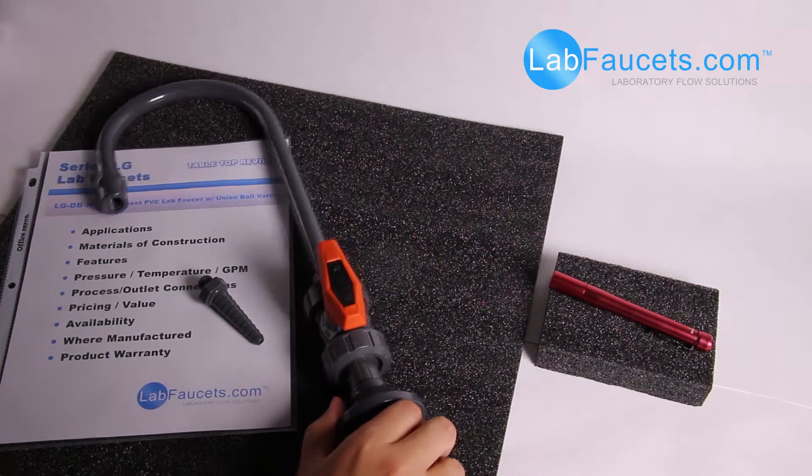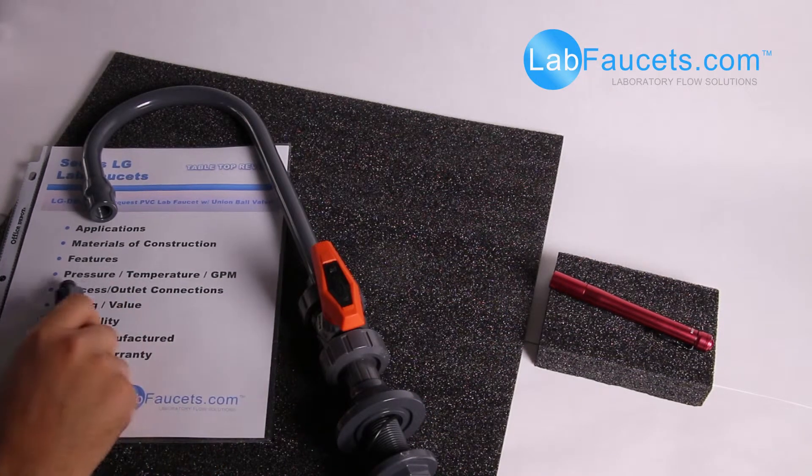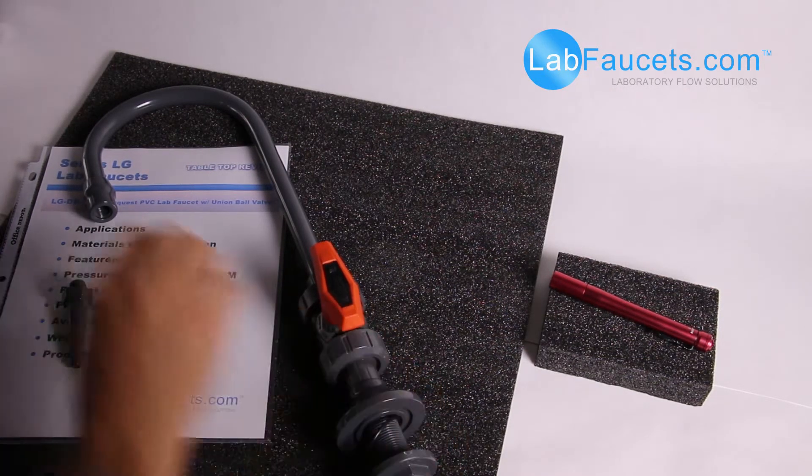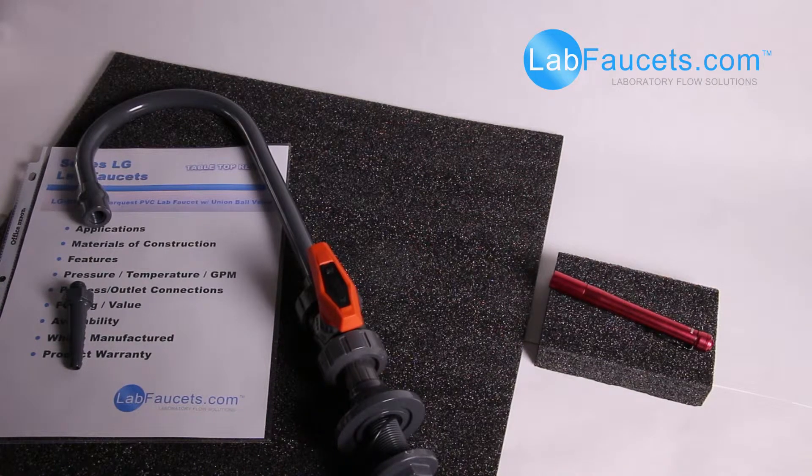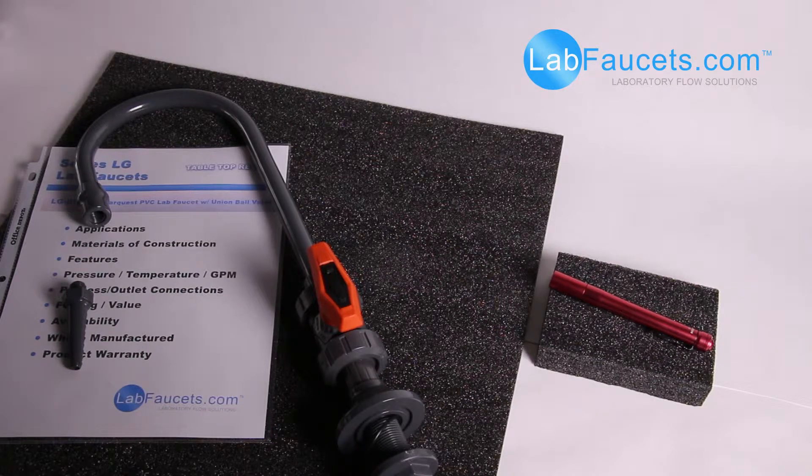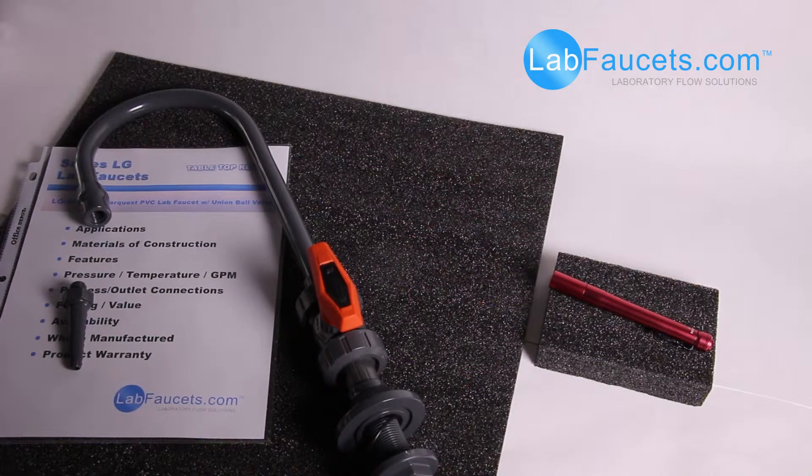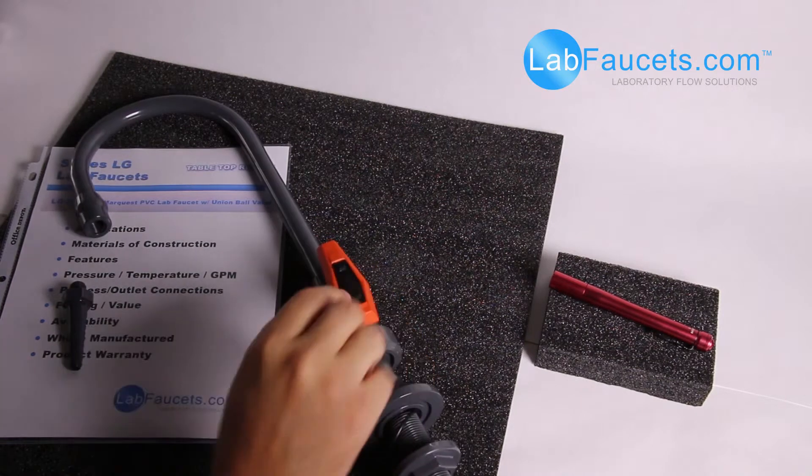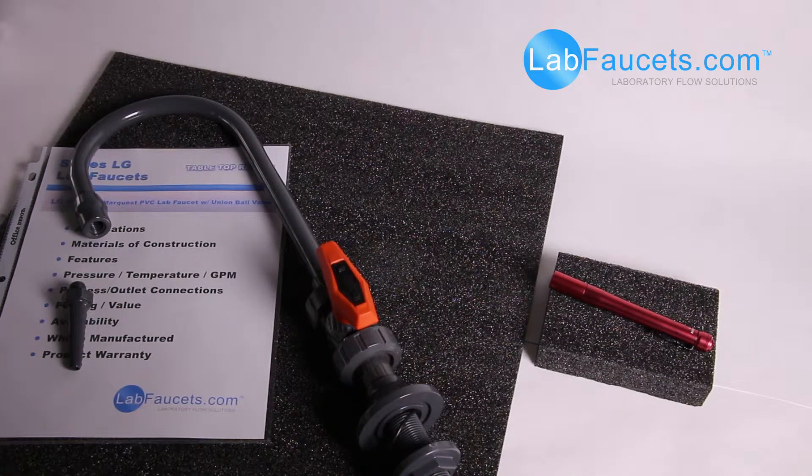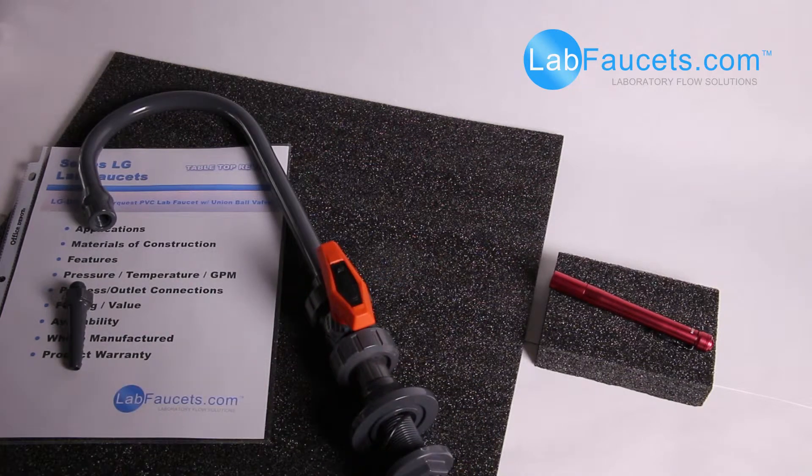This unit is manufactured primarily in the United States. These fittings, the gooseneck, the lab base here, the through-deck nipple shank is all manufactured in Costa Mesa, California. This valve is actually manufactured in Schaffhausen, Switzerland. Hence, finding a high-quality unit where you're able to install and not have to worry about the long-term issues of a failing handle or valve have been addressed.